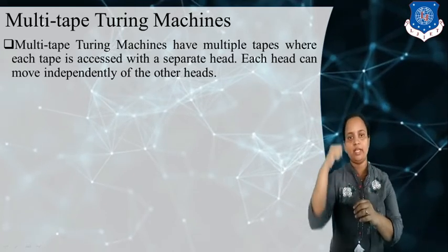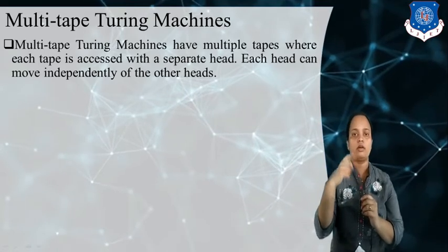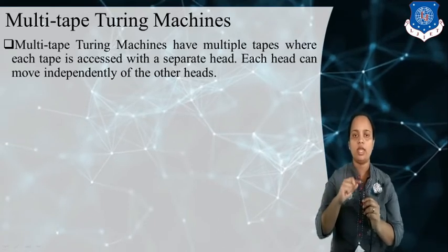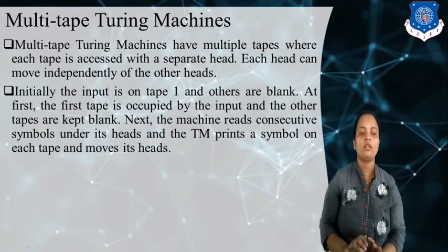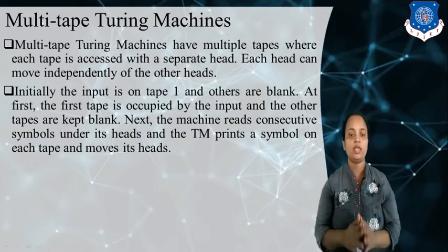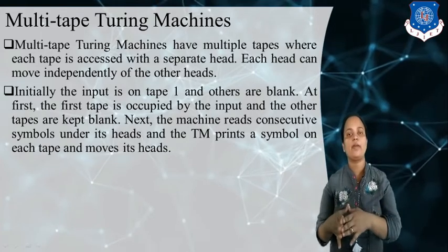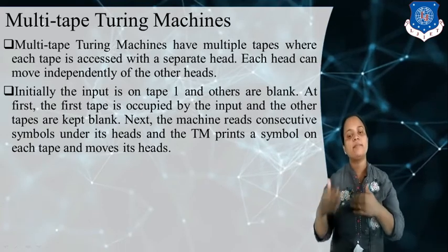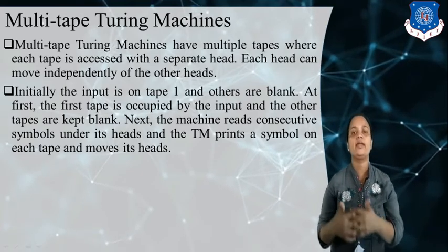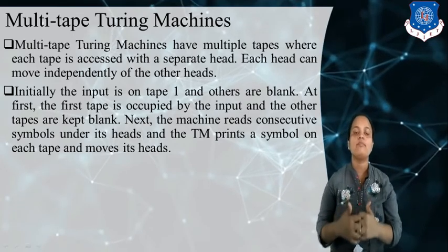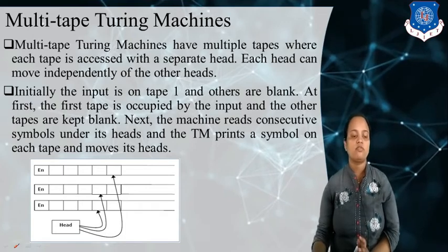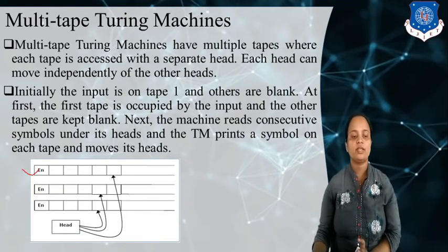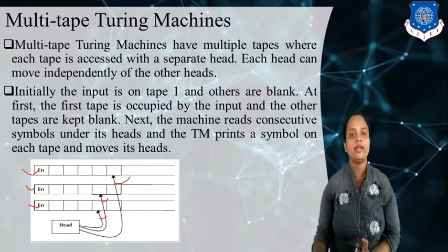Each head is moved independently of the other heads. There are multiple tapes, and for each tape there is a separate head, and each head is not dependent on any other head — each head works independently. Initially, the input is on tape one and the others are blank. The machine reads the consecutive symbols under its heads, prints a symbol on each tape, and moves its heads. In this figure of the multi-tape Turing machine, there are multiple tapes with separate heads, and no head is dependent on another.